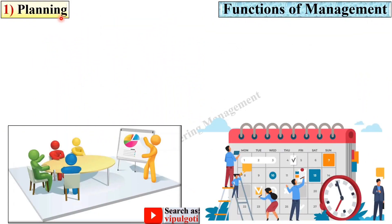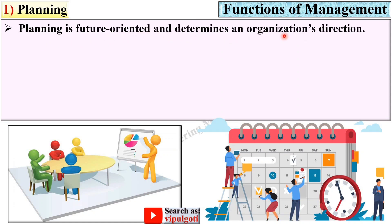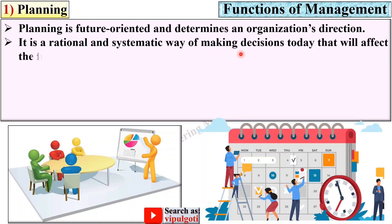Starting with the first one: planning. From this figure you can understand that planning is actually a function of management. Planning is future-oriented and determines the organization's direction — in other words, it indicates the vision of the organization. It is a rational and systematic way of making decisions today that will affect the future of the company.